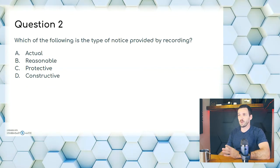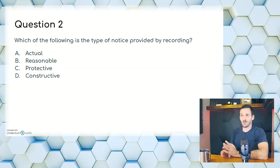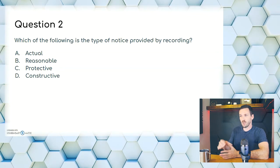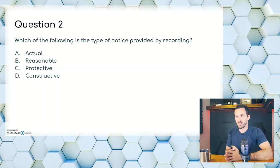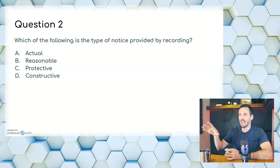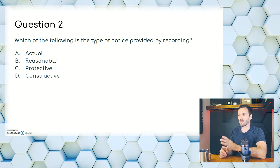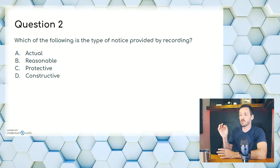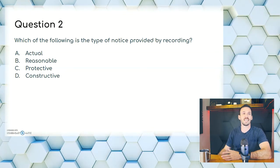Question two: which of the following is the type of notice provided by recording? A, actual; B, reasonable; C, protective; or D, constructive. The answer here is known by knowing keywords and terms — you're going to need to know a lot of those in all of these chapters. Reasonable doesn't make sense here, and protective isn't really a recognized notice type. Actual notice is more about knowing that a real estate transaction is going on, but constructive notice is the notice provided by recording. The answer here is D.